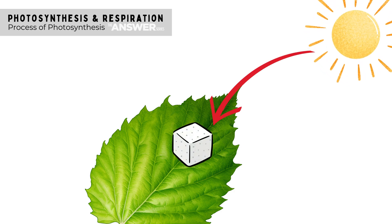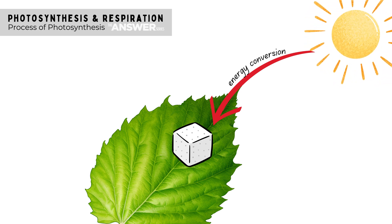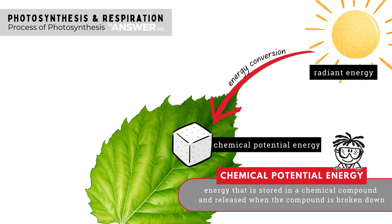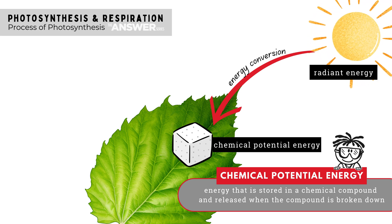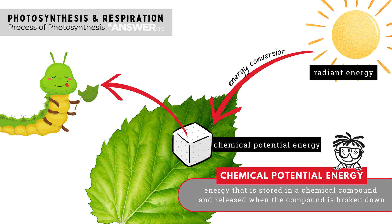When plants trap the radiant energy from the sun in food molecules like glucose, an energy conversion takes place. Radiant energy is converted into chemical potential energy, because the energy is stored in a chemical compound, namely glucose, and will only be released when the compound is broken down — for example, when an animal eats the plant.